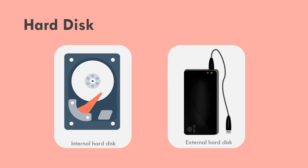A large amount of data can be stored permanently in the internal hard disk. It is a magnetic media device which is located in the system unit. The external hard disk is a portable storage device.